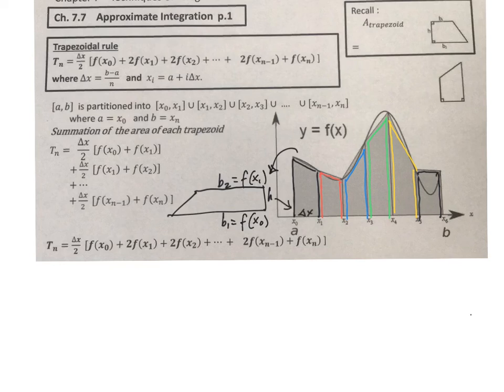So we have the formula for the area of a typical trapezoid. Area is 1 half f of x0 plus f of x1 times delta x. And we can write it like this: we can put delta x in front and say delta x over 2 times f of x0 plus f of x1.